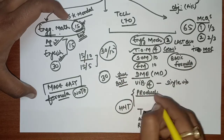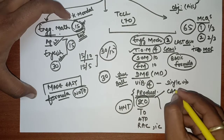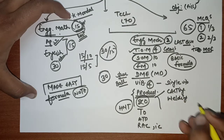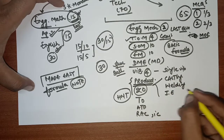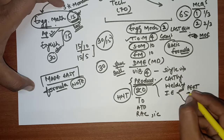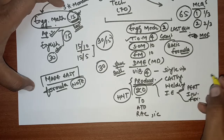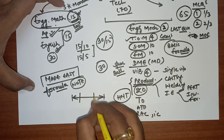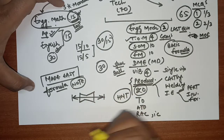The most important part is Production, which carries 20 marks. Casting carries about 4 marks, Welding carries 2 to 4 marks. After that, Industrial Engineering has many parts — topics include PERT/CPM, Inventory, and Forecasting. You need to analyze the previous year questions to see which topics are repeated and which subject carries the most marks.